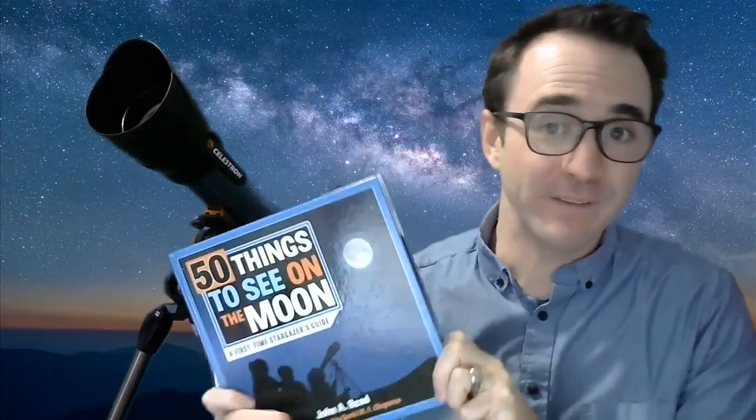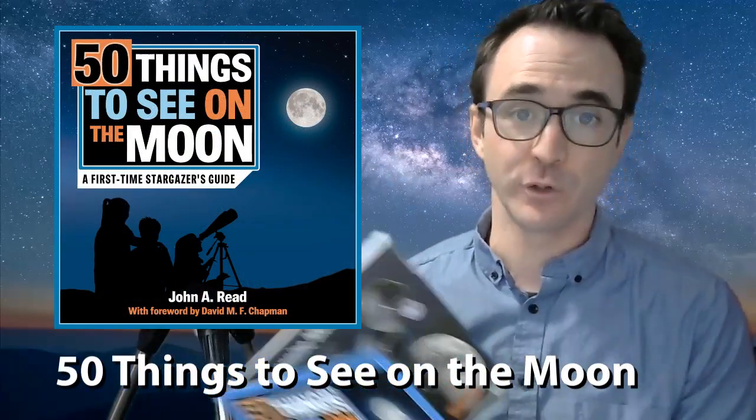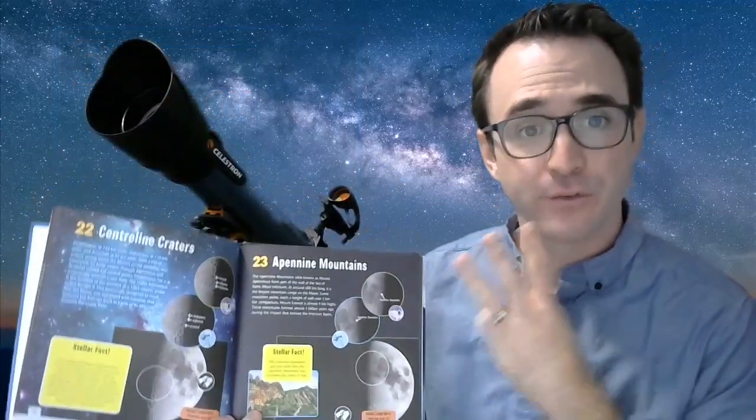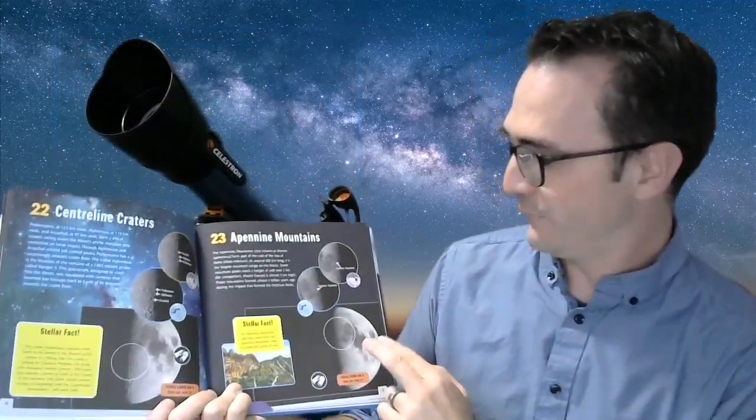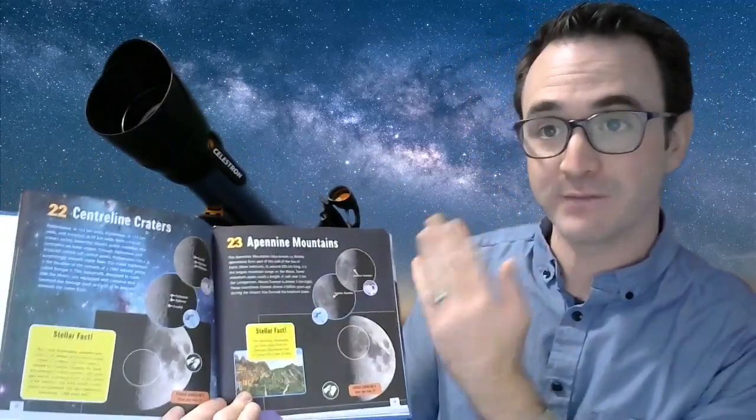So the second option is to get a book like my book, 50 Things to See on the Moon. This book walks you through each phase of the lunar cycle day by day and highlights the best targets. It also has three views for each target. One for binoculars. One for refractor telescopes, which flip the image left to right. And one for Newtonian telescopes, which rotate the image 180 degrees.